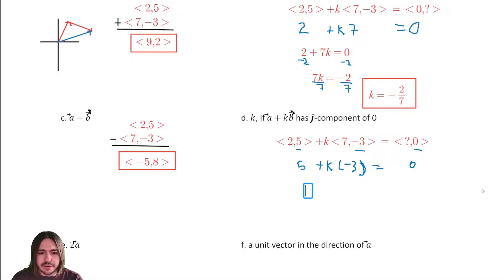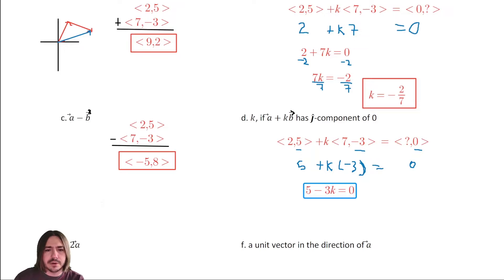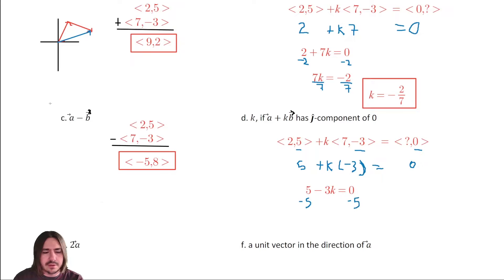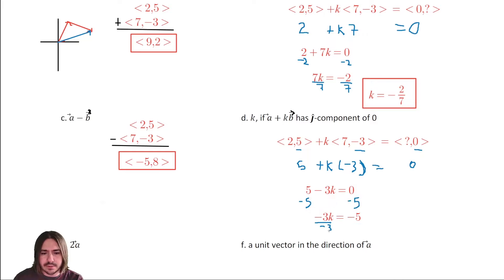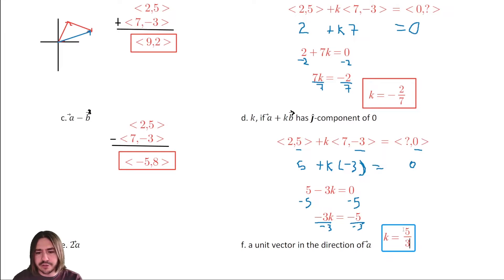Cleaning up the equation: five minus three K equals zero. Subtract five from both sides to get negative three K equals negative five, then divide both sides by negative three. We get K equals another fraction: five thirds.